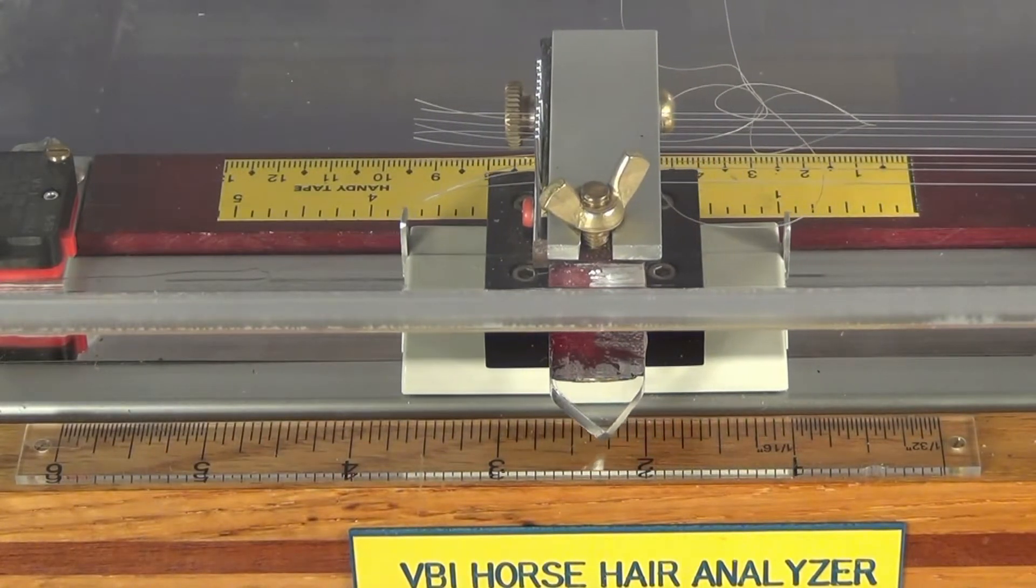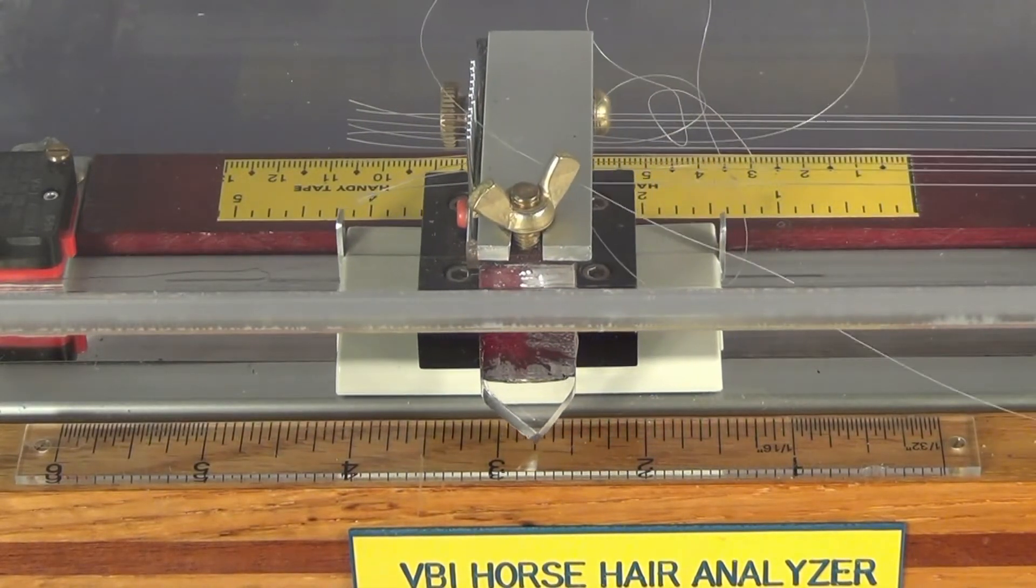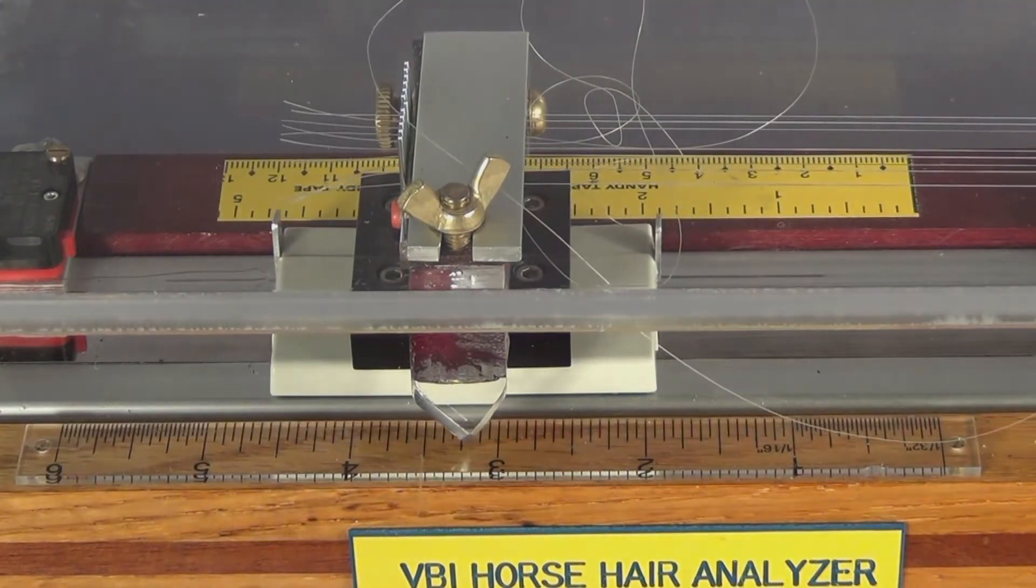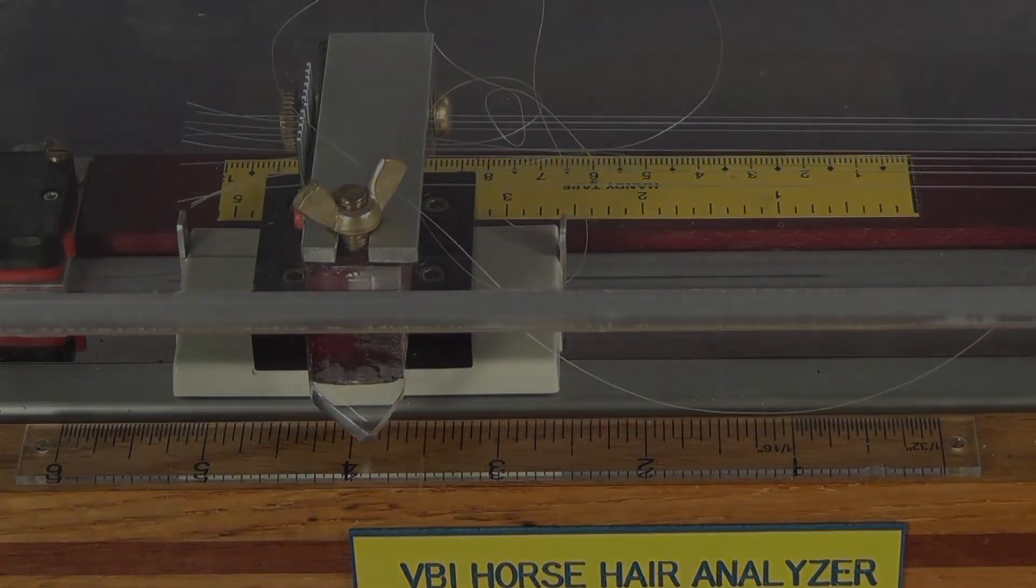The hair analyzer is a proprietary device developed by VanBode Instruments Limited and is the only unit of its kind in the world.